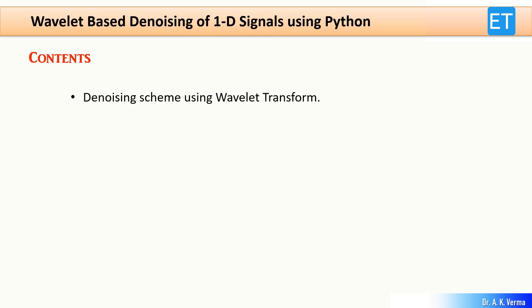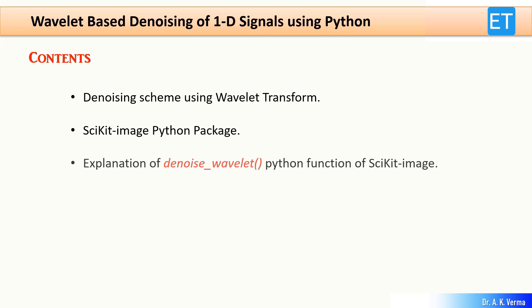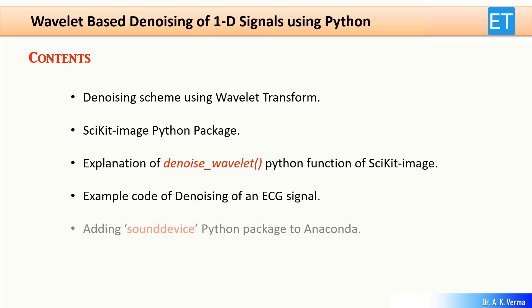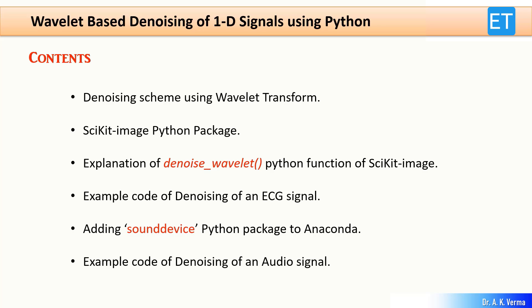Let's see the content of this video. First, I will explain the wavelet transform based denoising scheme, then I will explain the scikit-image Python package and the functions available for denoising signals. Then I will explain the denoise_wavelet function under the scikit-image package, show one example code of denoising an ECG signal, show how to add the sounddevice Python package to Anaconda so you can play NumPy arrays as audio, and finally show the example code of denoising an audio signal.